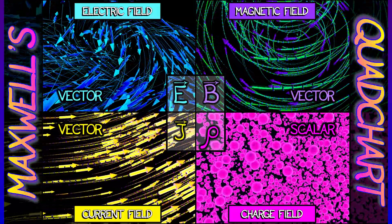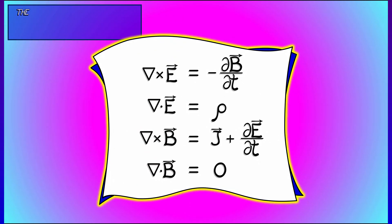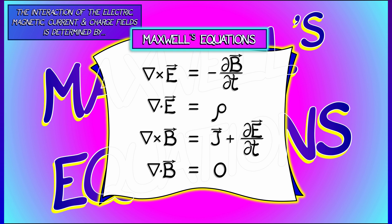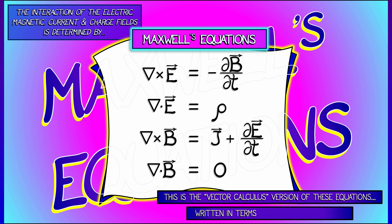So how do these four fields — E, B, J, and rho — tie together? That's Maxwell's equations. Maxwell's equations tell you the relationship between the electric, the magnetic, the current, and the charge fields. It's going to take a little bit of time to unpack these equations. This is the vector calculus version in 3D, which uses operations like curl and divergence, but there's a bit more going on as well.